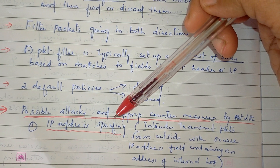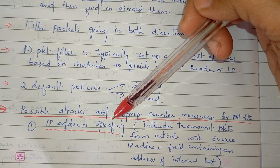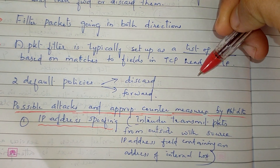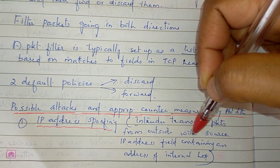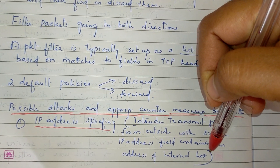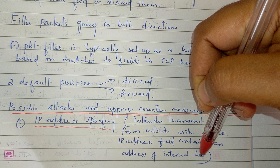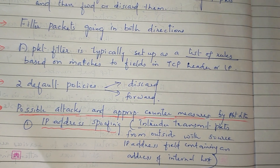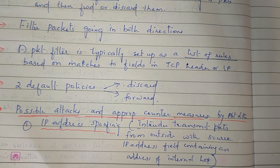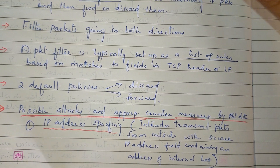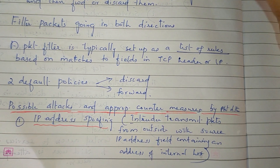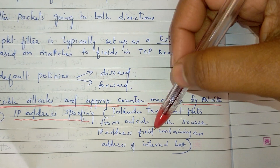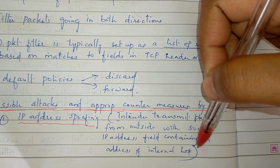In the IP Address Spoofing attack, the attacker sends a packet from outside of the network with the source IP address field containing an address of an internal host. If you want to add a packet from outside, you can put an internal network address in the source IP address field.